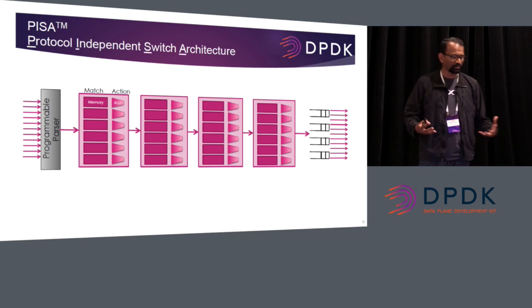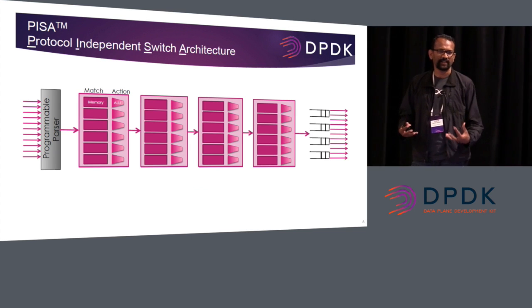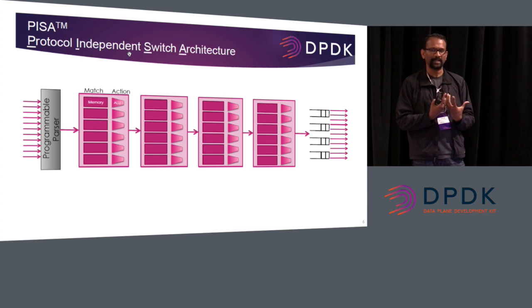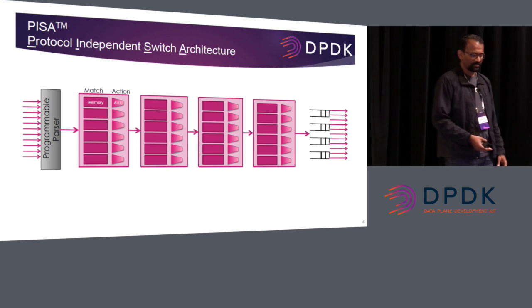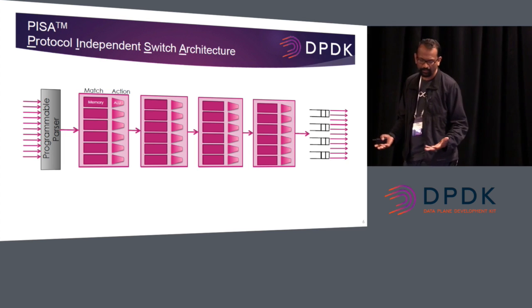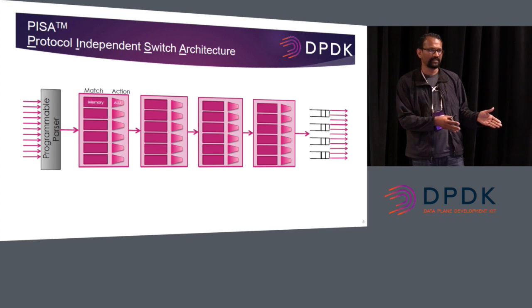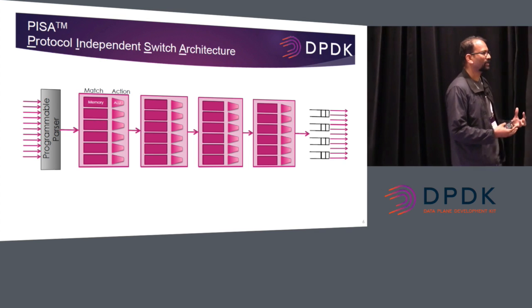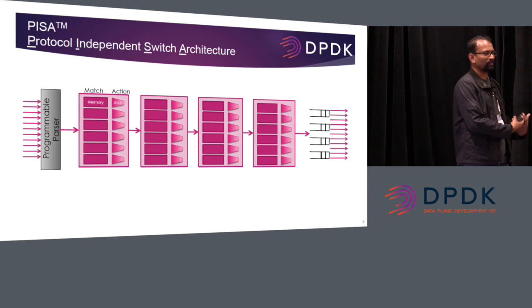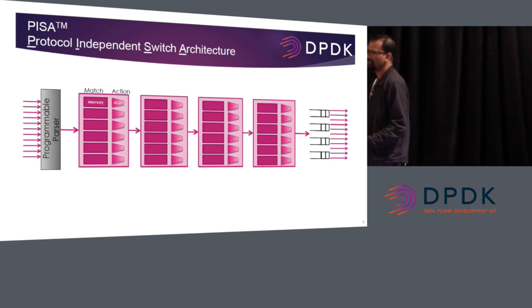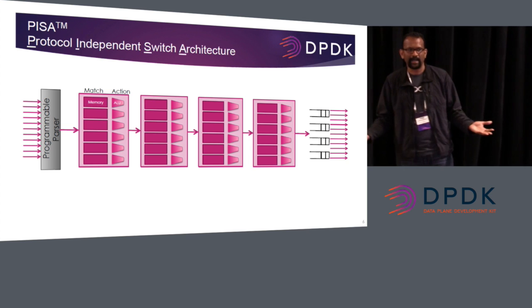PISA is a very simple, RISC-like architecture that has taken the primitives for packet processing and created an engine out of it. The three main components are a programmable parser, using which you can parse any protocol, and then a series of match-action units or match-action engines where you can look up the fields you have parsed in memories and then do some packet transformation actions.